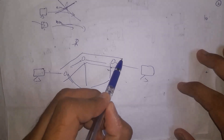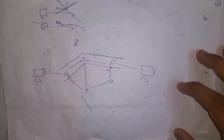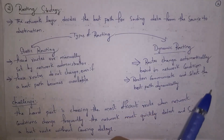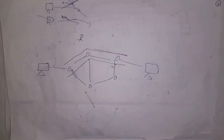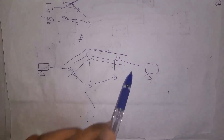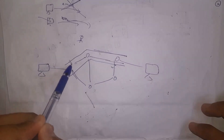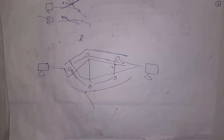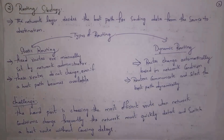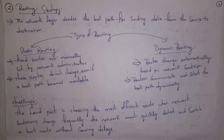Even though a better route is available, in static routing the device communicates only through the pre-set path. In dynamic routing, the route changes automatically based on network conditions. For example, a device starts transferring data through one route but identifies that the route has heavy traffic, so it automatically switches to another route. Sometimes traffic is very high and sometimes very low — finding the best path quickly in changing conditions is complicated. If the network layer takes too much time to find the best path, data transfer will be delayed.